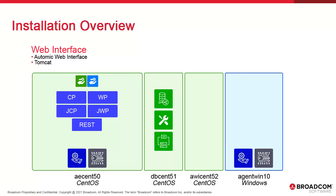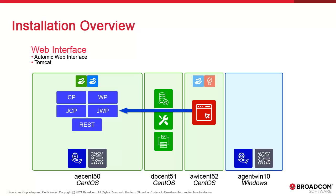On the third Linux host, we install the Atomic Web Interface, or AWI. This is the standard user interface. It can either be installed in a web application server or as a self-contained embedded JETI server. We use the first option. We install Tomcat and deploy AWI. AWI connects to the automation engine and requires the public key certificate for security.